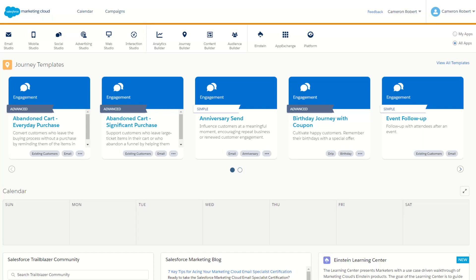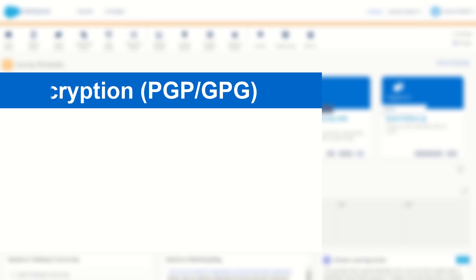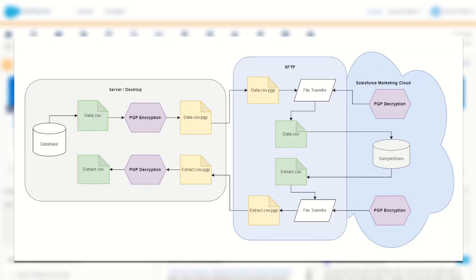G'day Trailblazers, my name is Cam and for today's video I'm going to show you how to configure PGP encryption so that you can encrypt and decrypt FTP files in Salesforce Marketing Cloud. Let me step you through today's scenario. We're going to start off with our server/desktop, where we'll have a file called data.csv which we want to encrypt and send to Salesforce Marketing Cloud.